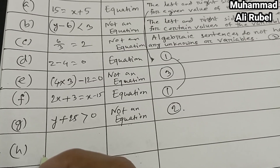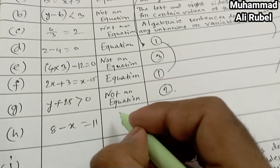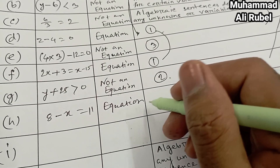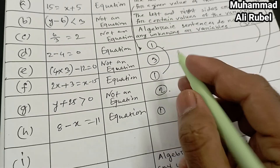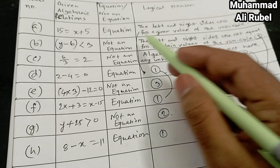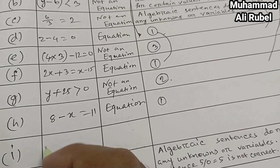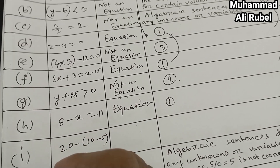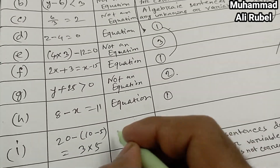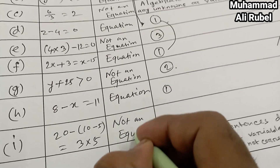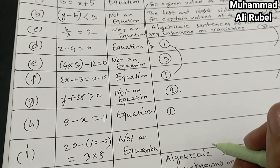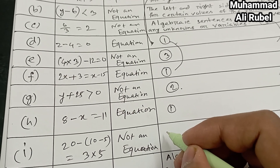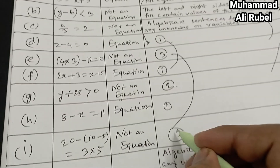Item h: 8 minus x equal 11 — it is an equation. We write number one: the left and right sides are equal for a given value of the variable. Item i: 20 minus 10 minus 5 equal 3 into 5 — it is not an equation. We write number three.